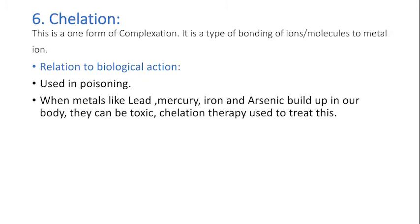The sixth property is chelation. This is one form of complexation. It is a type of bonding of ions or molecules to metal ions. Relation to Biological Action: Chelation is used in poisoning cases when metals like lead, mercury, iron, and arsenic build up in our body and become toxic to us. Chelation therapy is used to treat this.